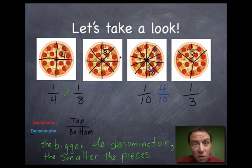So if you're going to take one thing from this, take that when the denominator is larger, the pieces are actually smaller. Also, a numerator is the number on top and the denominator is the number on the bottom.